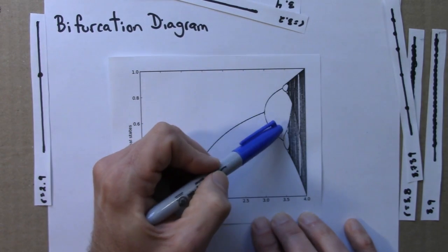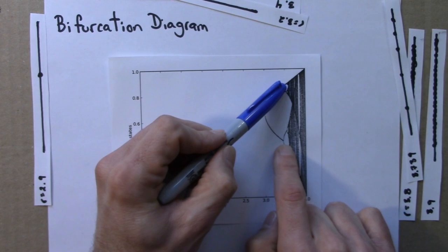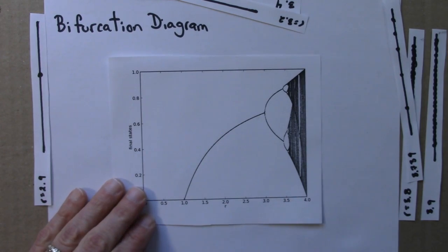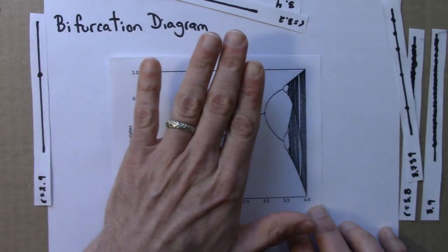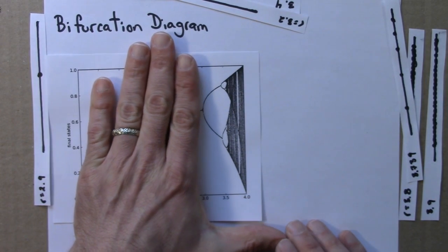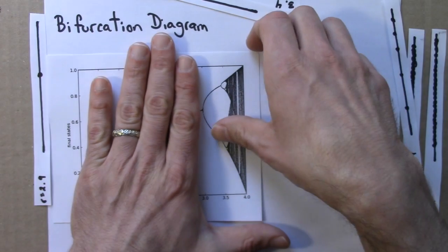Here we see we have a bifurcation from period 2 to period 4. So that's another period doubling bifurcation. Okay, let's zoom in on the bifurcation diagram. Let's look at just this portion. Let's look at what's going on from 3 to 4 since this is where a lot of the interesting action is.